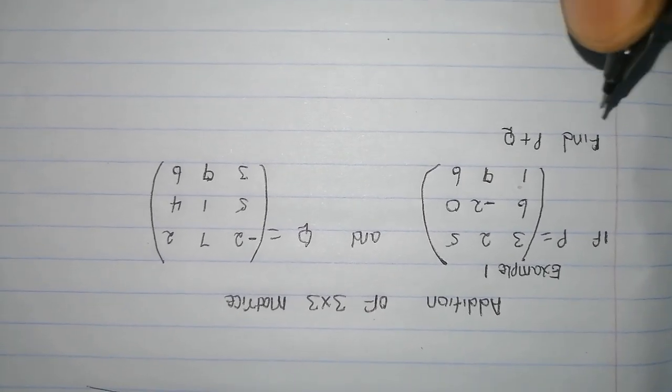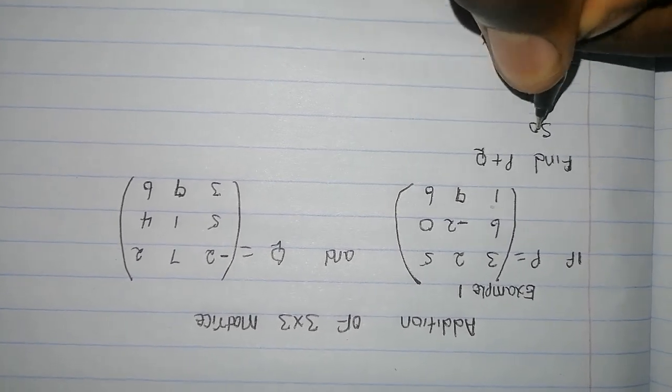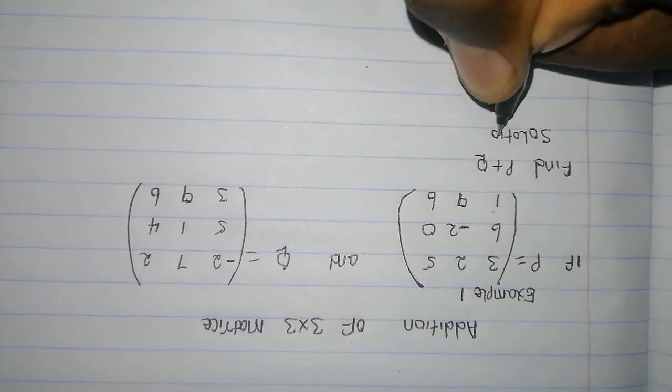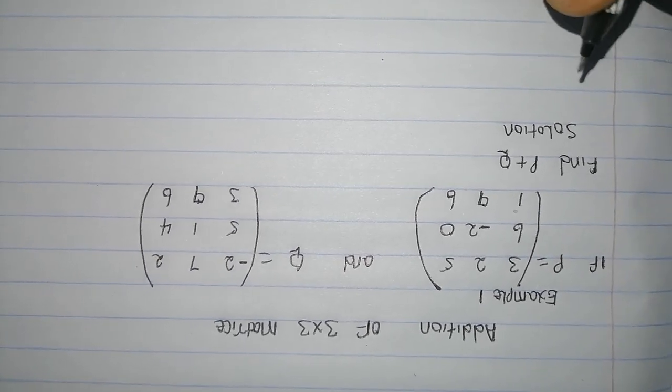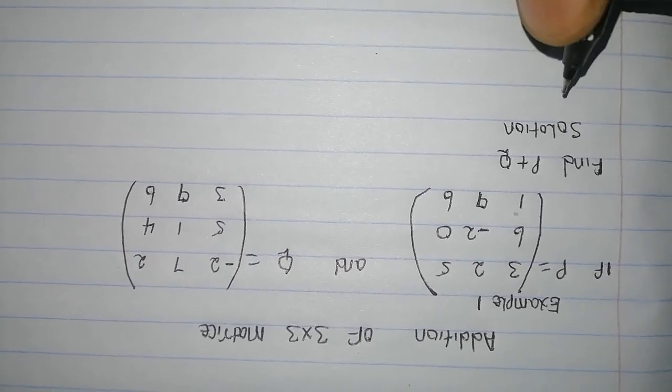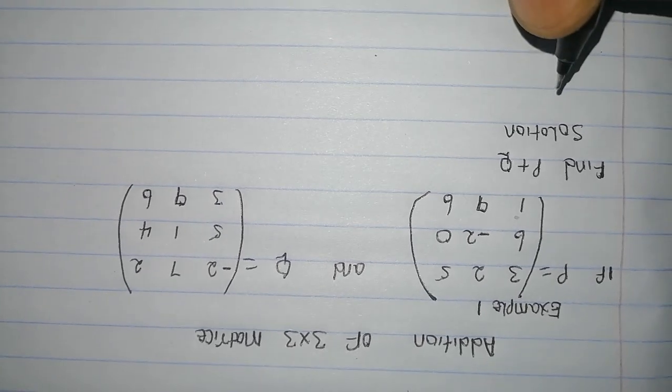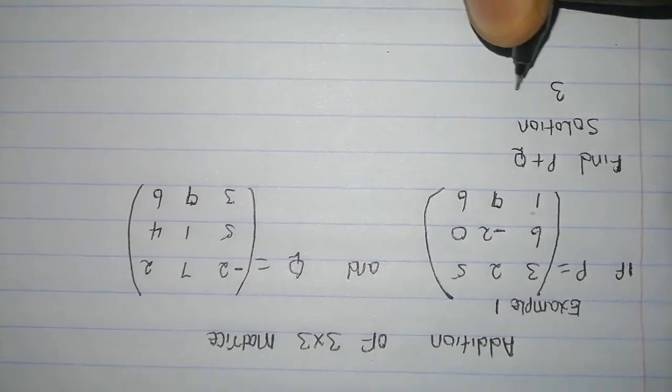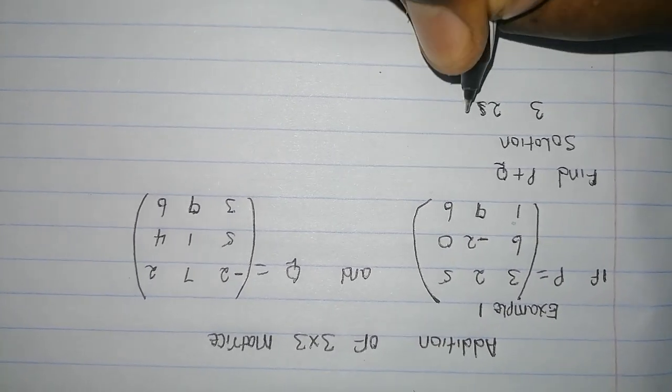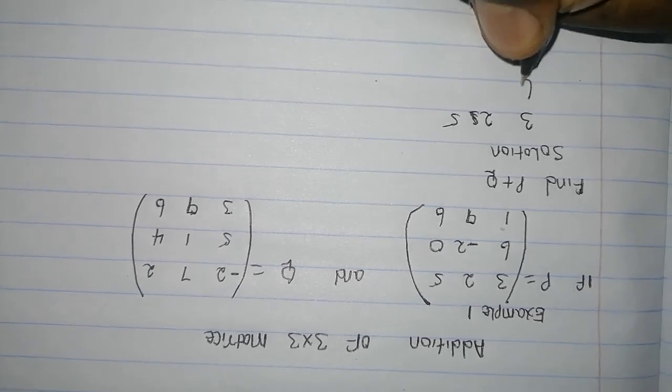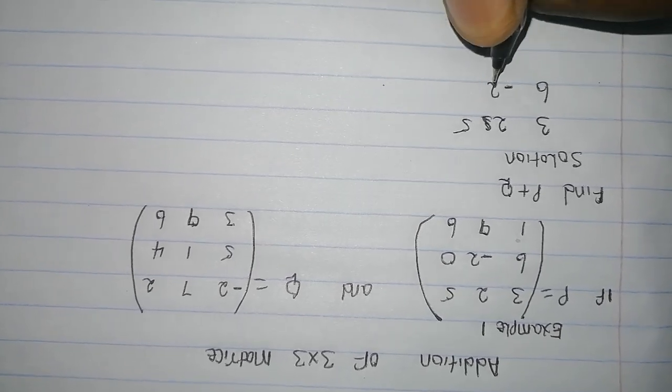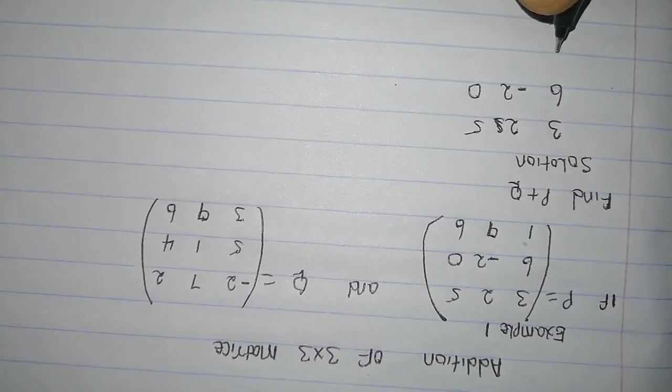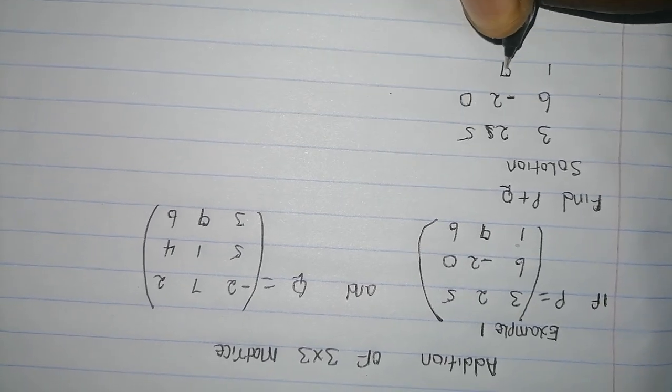So, we will start solving our matrix addition. I will take my first matrix, which is P: 3, 2, 5, 6, negative 2, 0, 1, 9, 6,